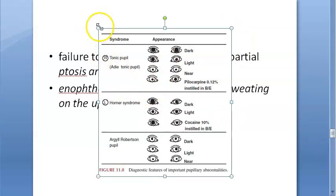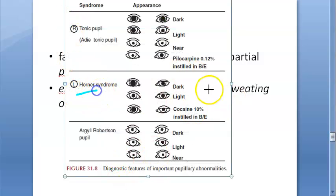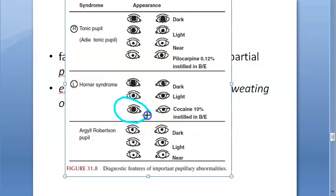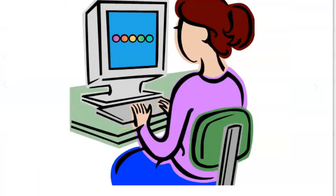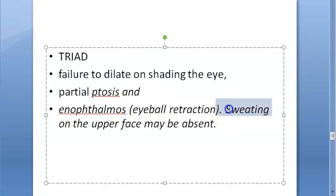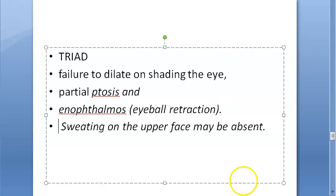In Horner's syndrome affecting the left eye, in the dark the normal eye dilates but the Horner's eye does not dilate. In light, the normal pupil constricts - that's fine. With cocaine, the normal pupil dilates but cocaine has no effect on the Horner's pupil - it fails to dilate. The triad is: failure to dilate on shading, partial ptosis, and absent sweating of the upper face.